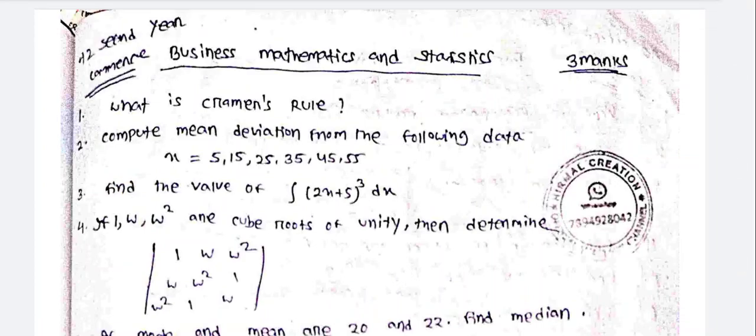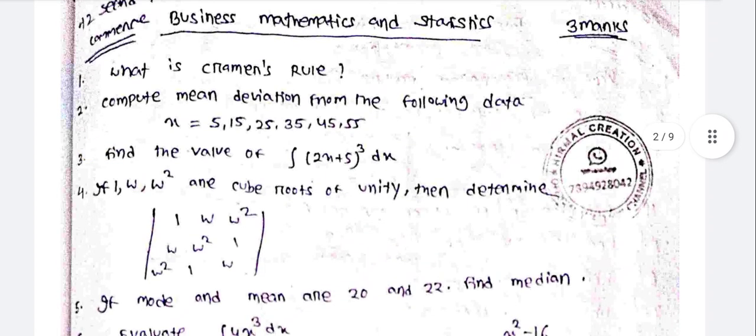Plus 2 Second Year Commerce, Business Mathematics and Statistics. What is Cramer's Rule?